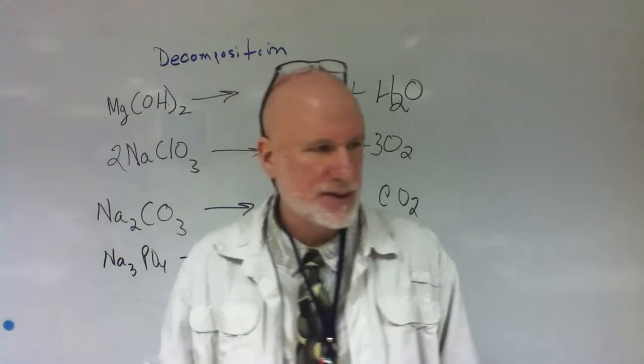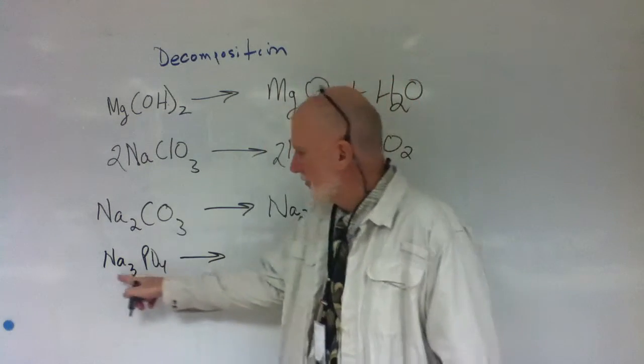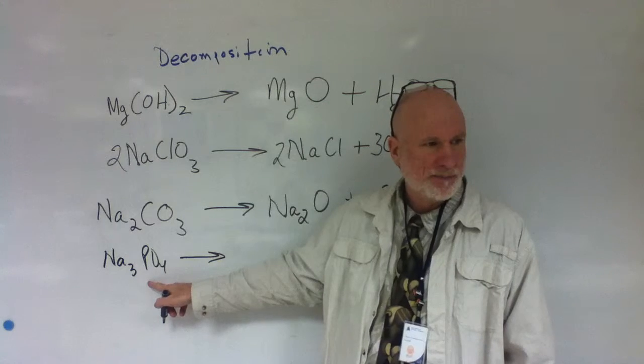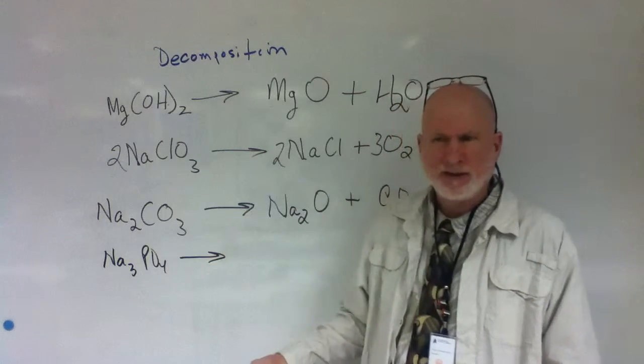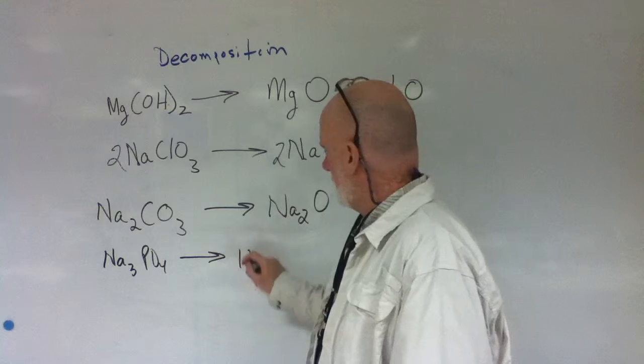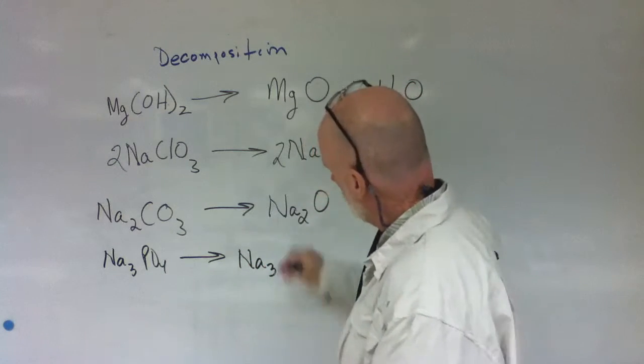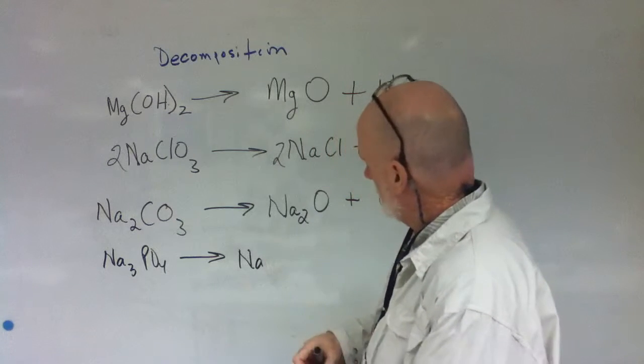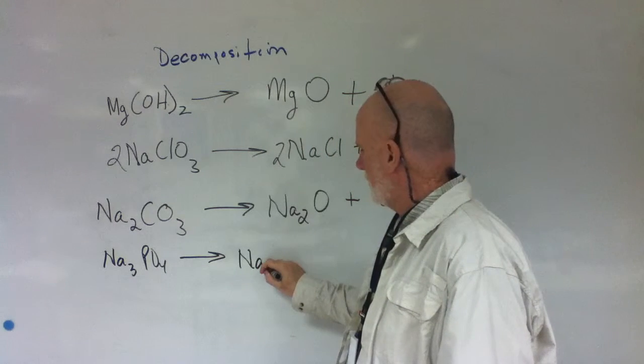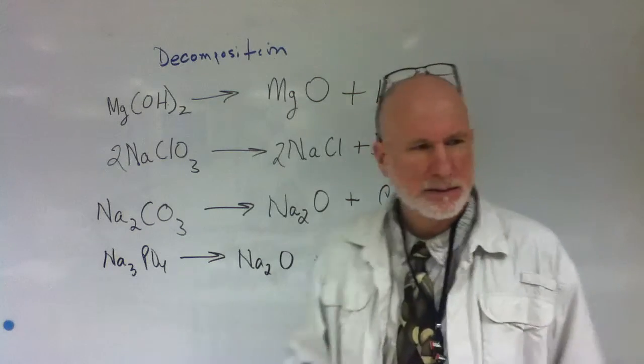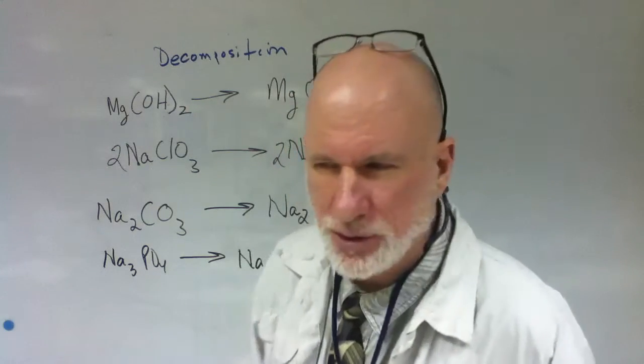The metal anhydrides are easy. What's the base anhydride that's going to be for this? Sodium what? Sodium oxide. Very good. So this one's going to be sodium oxide. This one's going to be sodium oxide plus what? P2O5.